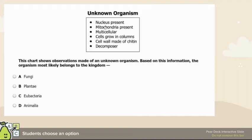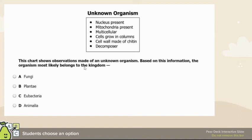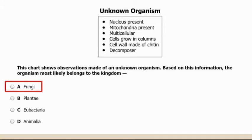For this unknown organism: it has a nucleus, mitochondria, it's multicellular — so we know it's not eubacteria. Cells grow in columns, cell wall made of chitin, which rules out plants or animals. It's a decomposer. This is fungi. Anytime you see decomposer, think fungi. Cell wall made of chitin means fungi — plants have cell walls too, but fungi cell walls are made of chitin.